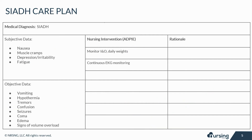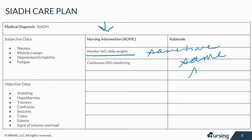Let's take a look at nursing interventions included in the care plan. Monitor intake and output and monitor daily weights. Patients may be on fluid restrictions to help balance intake and output, which should be calculated along with daily weights at the same time on the same scale — that's super important — every day.